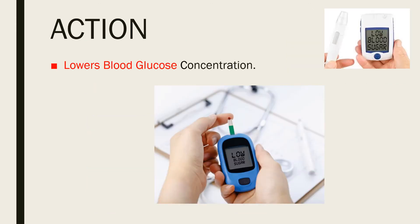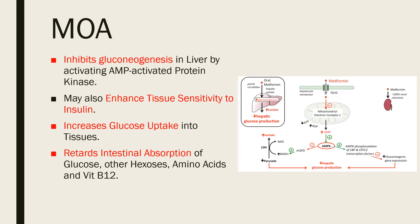The action of metformin is to lower the glucose concentration present in the blood. Metformin inhibits gluconeogenesis in the liver by acting on the adenosine monophosphate activated protein kinase — the AMP-activated protein kinase (AMPK). This suppresses hepatic gluconeogenesis and glucose output from the liver, which is the major action responsible for lowering blood glucose in diabetics.